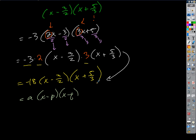What's left behind is x minus 3 halves times x plus 5 thirds. So the values of A, P, and Q are: A is negative 18, P is 3 halves, and Q is negative 5 thirds. That tells me this function is being massively stretched and reflected, and the x-intercepts are at 3 halves and negative 5 thirds.